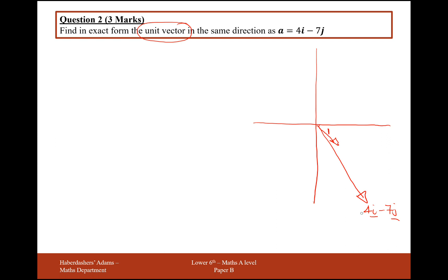So what we generally do with these is work out the total distance from 4i minus 7j to the origin, and then just divide this vector by that amount. The modulus of A is going to be the square root of 4 squared add 7 squared from a Pythagoras triangle, which gives us the square root of 65.